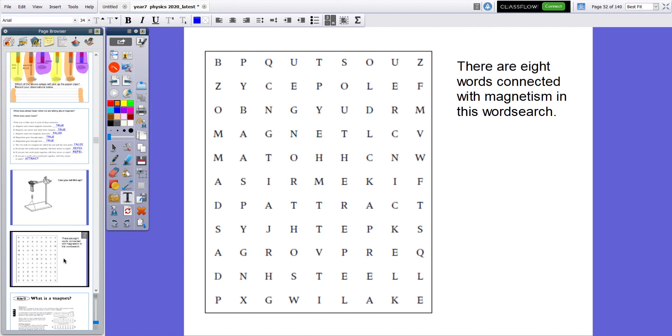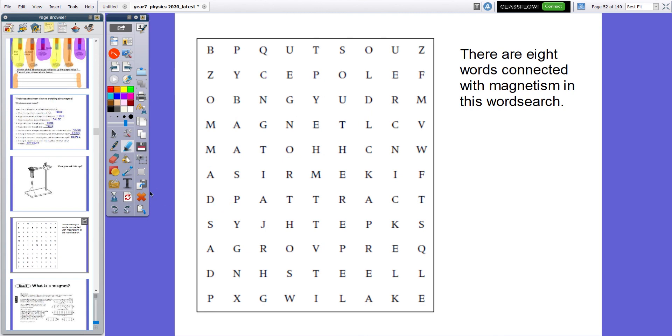There are eight words connected with magnetism in this word search. See if you can find them and then I will show you the answer. Have a go now. Okay, here they are. Magnet. Steel. South. North. Attract. Repel. And pole. And for the life of me, I can't find the eighth one at the moment. So if you can find that, well done to you.